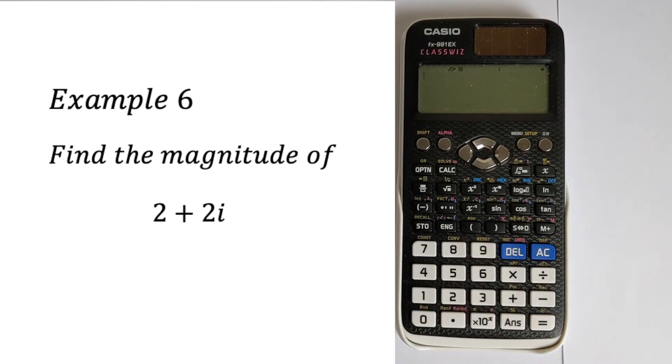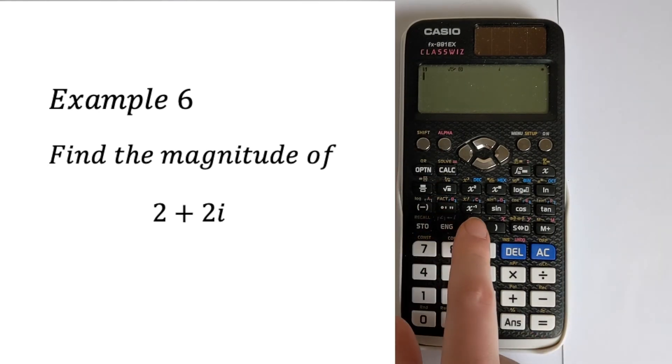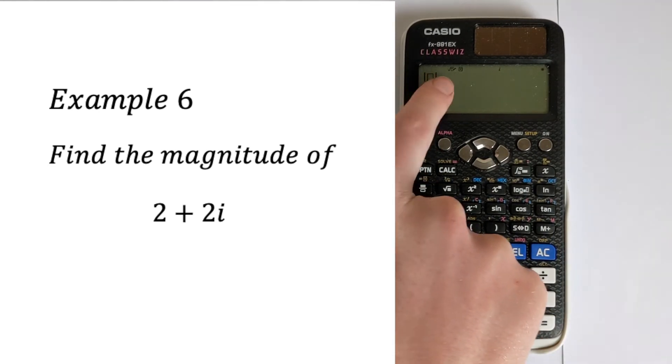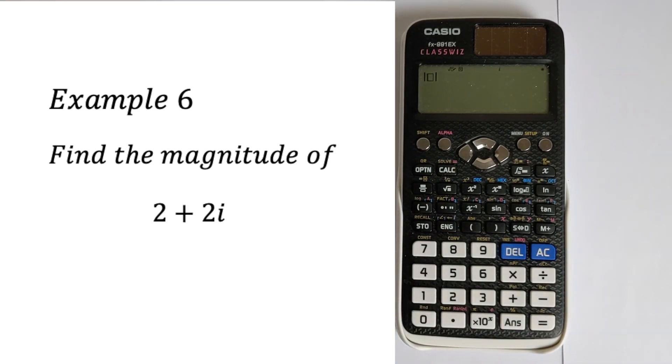We'd have to look on the calculator for where it says abs, which is on here. Shift abs, and we get these two lines for the magnitude. We can put in 2 plus 2i, then press equals. That will calculate the magnitude—it's squaring, summing, and square rooting for you.